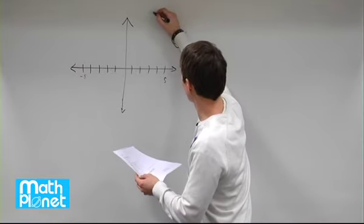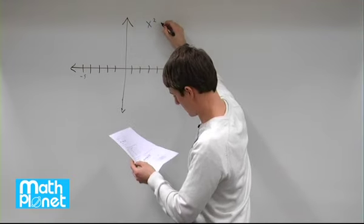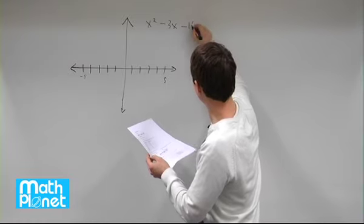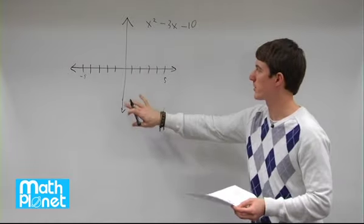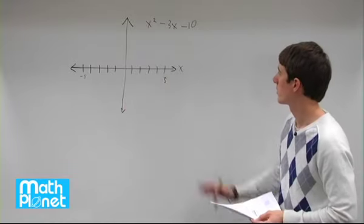We have this expression, x squared minus 3x minus 10. We want to graph this where this is x and this is our output variable here.